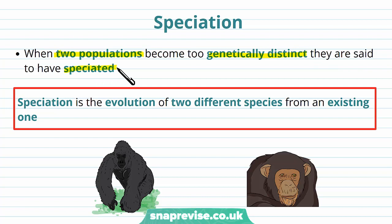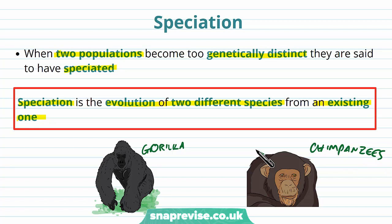One example of this is the gorilla and the chimpanzee, both large apes that actually originated from the same species — we'll just call it species X. At one point the population of X had two distinct groups that were too genetically different from each other, so they couldn't be classed as the same species anymore. Half were termed gorillas and half chimpanzees. So speciation occurred where one species gave rise to two new ones.